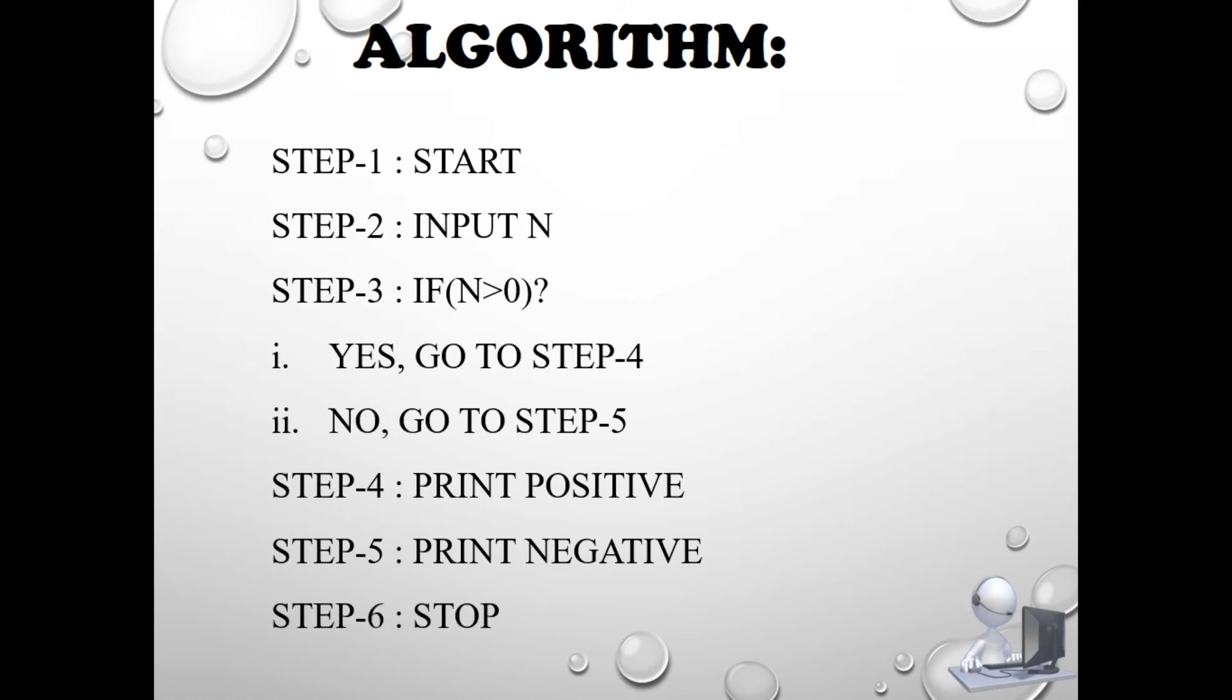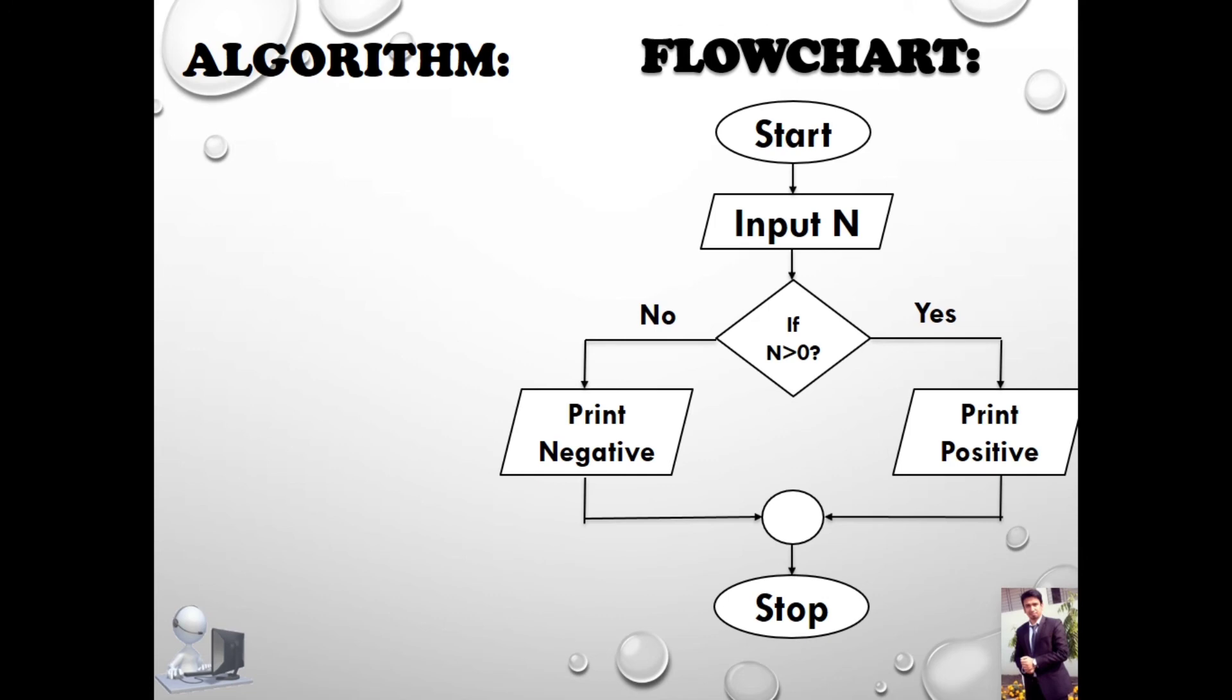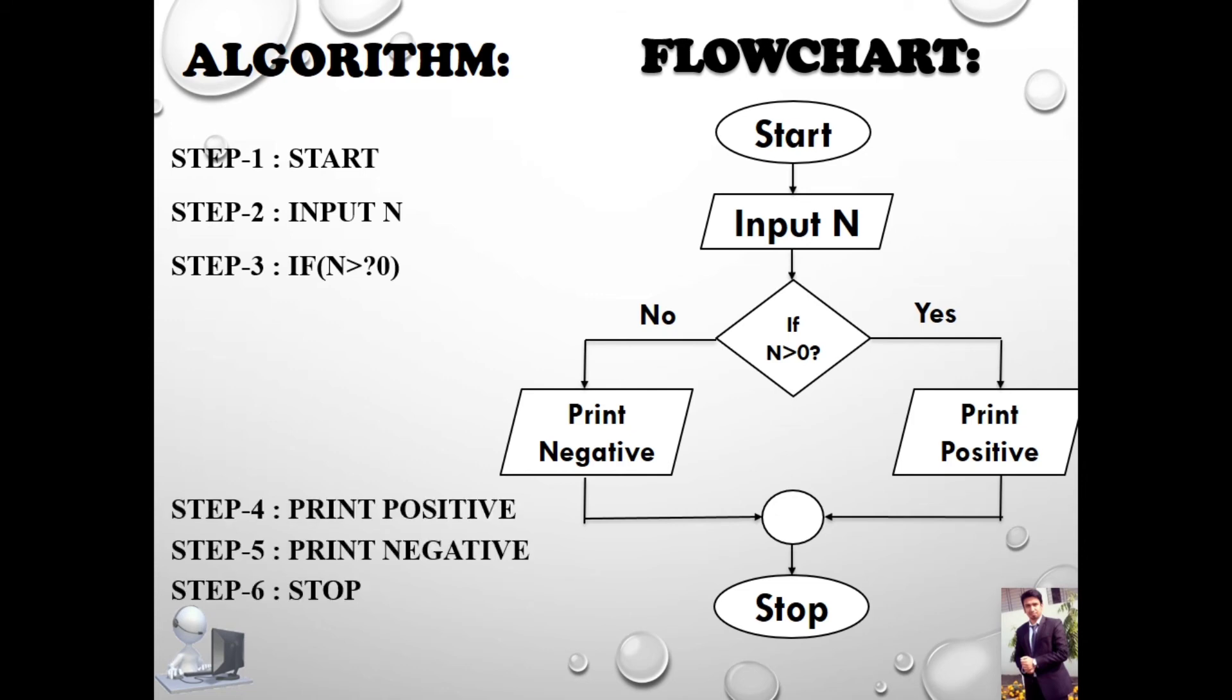Let's look at this algorithm and flowchart drawn together. The right side is the flowchart—I have already added this. And here's the algorithm. Step one, you can see from the flowchart: Step one, Start. Step two, Input N. Step three, If N is greater than zero. Step four, Print positive. Step...